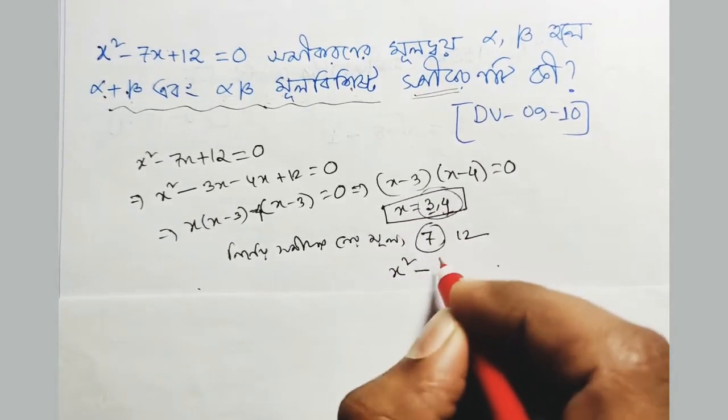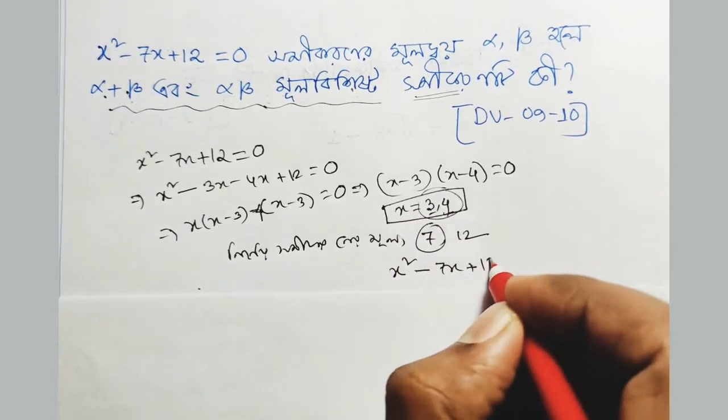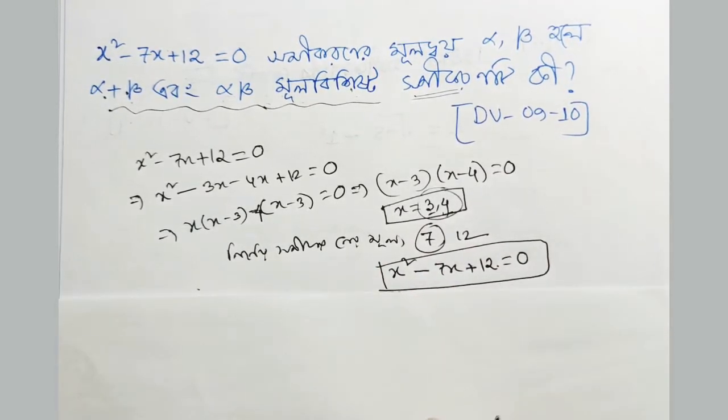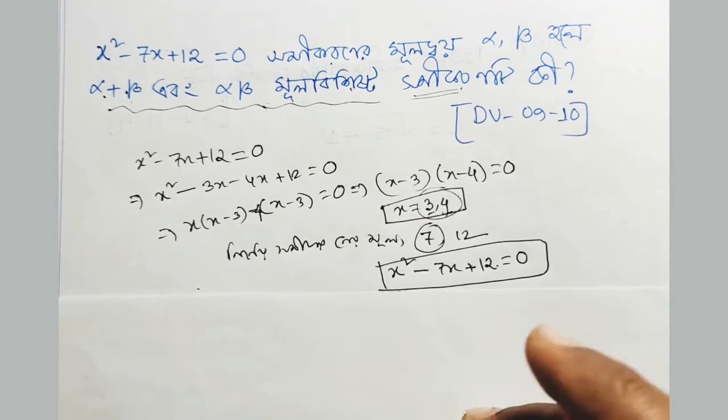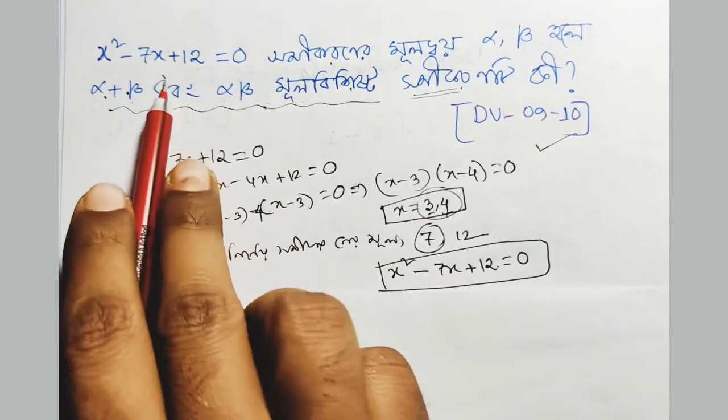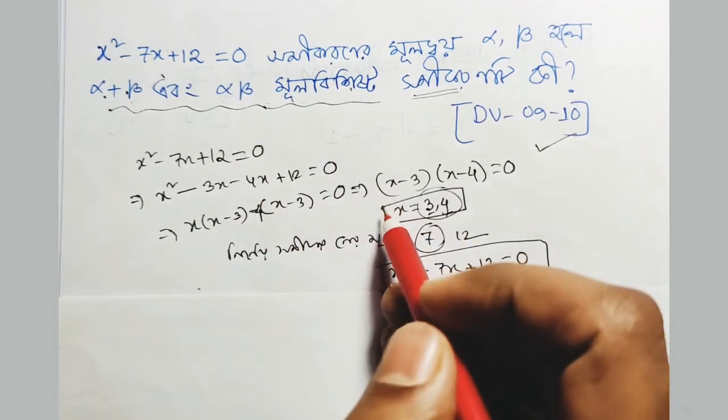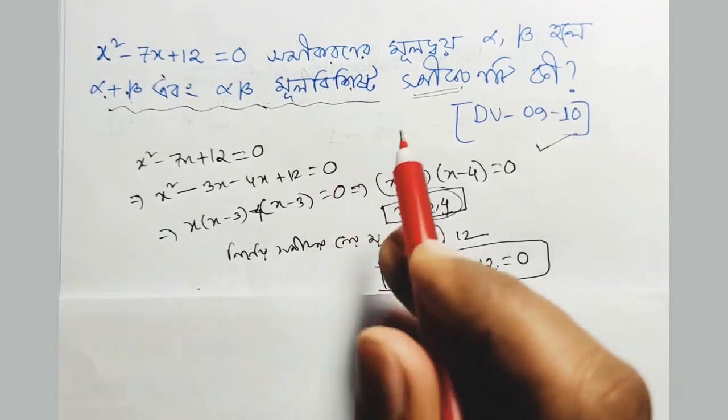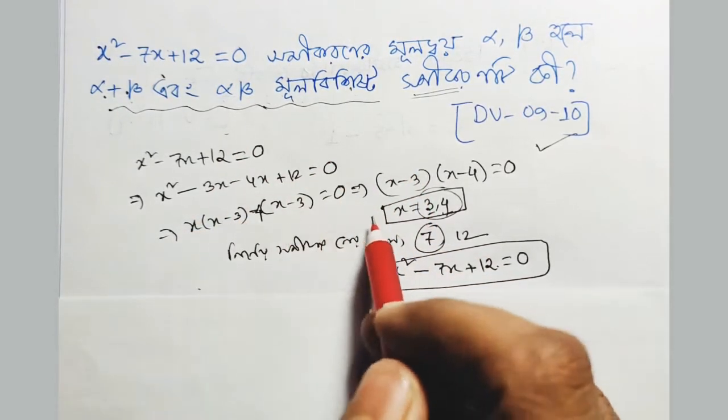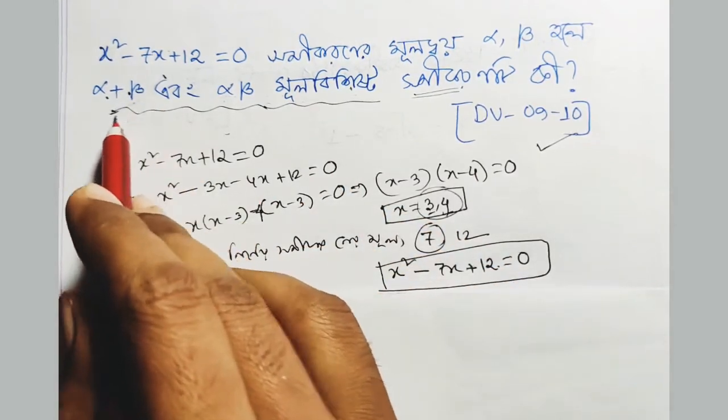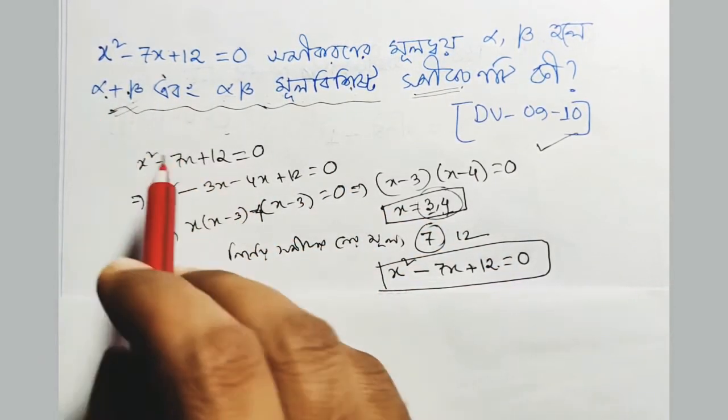For the equation x² - 7x + 12 = 0, we can also write it as x² minus (alpha + beta)x plus (alpha × beta) = 0. The coefficient of x gives us the sum, and the constant term gives the product.